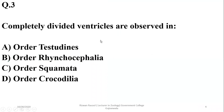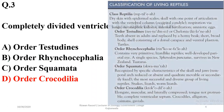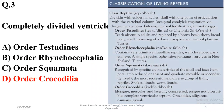Question number three: completely divided ventricles are observed in which group? All reptiles have incompletely divided ventricles except order Crocodilia. Crocodiles have completely divided ventricles like mammals and birds.